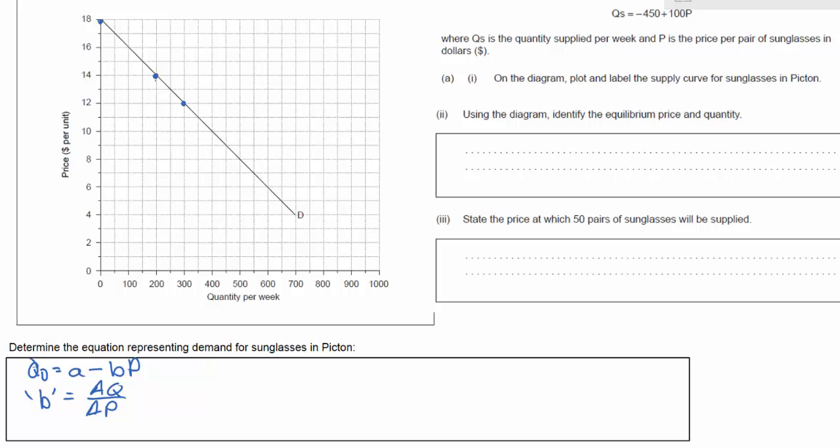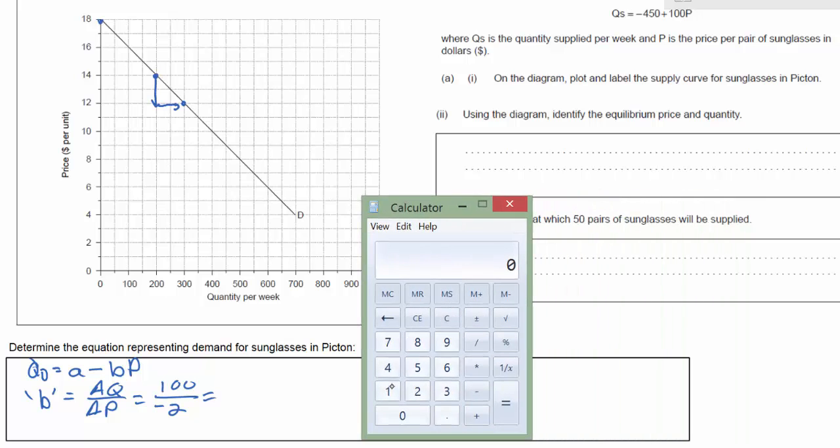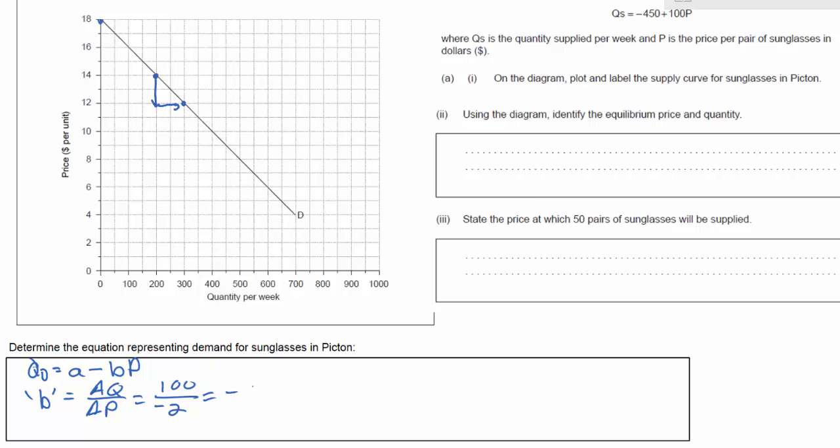So I can see here that for every two dollar decrease in price quantity demanded increases by 100 units. So we go from 200 to 300, so our change in q is going to be 100 resulting from a 2 dollar decrease in price. So that's a negative 2. While it's pretty easy to do in our head we're going to actually just use the calculator here. So we've got 100 divided by negative 2 gives us negative 50. So now we know that our demand equation is qd equals a minus 50 times the price.